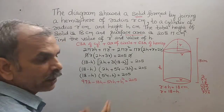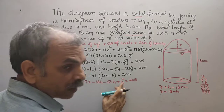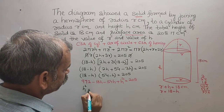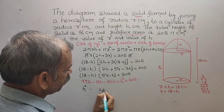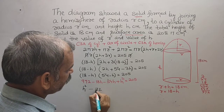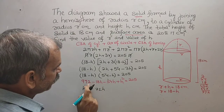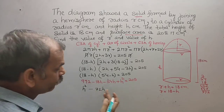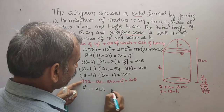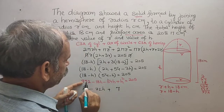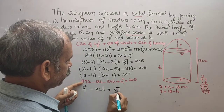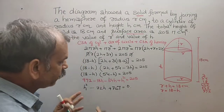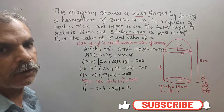Bringing everything to the left side: h² − 72h + 972 − 205 = 0, which gives h² − 72h + 767 = 0. We now solve this using the quadratic formula.